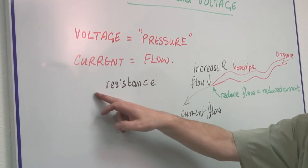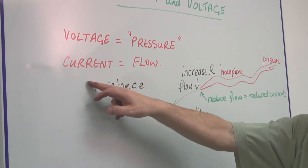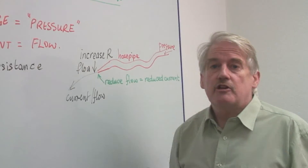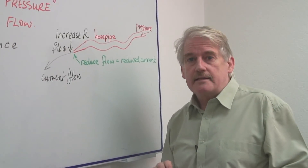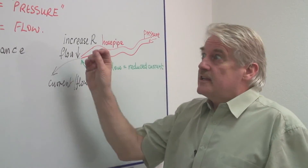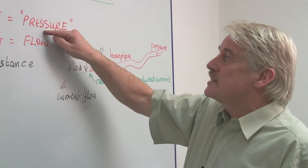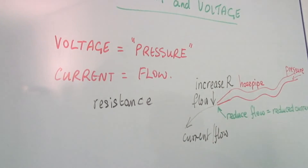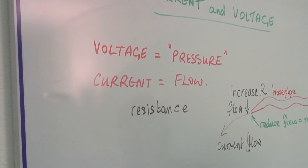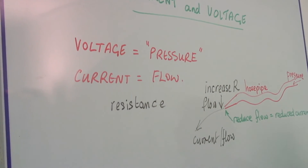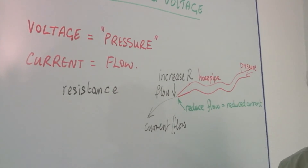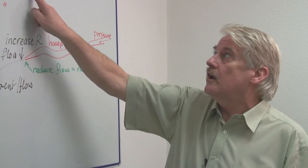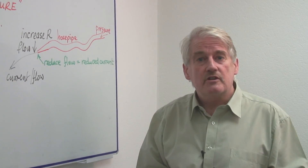If the electrical wire has a high resistance, you need a big pressure to push electric current through it. So this is why there is a difference between these two terms. Voltage is about how hard you're pushing. Current is about how much actually goes through. That is the basic difference between current and voltage in electrical circuits.